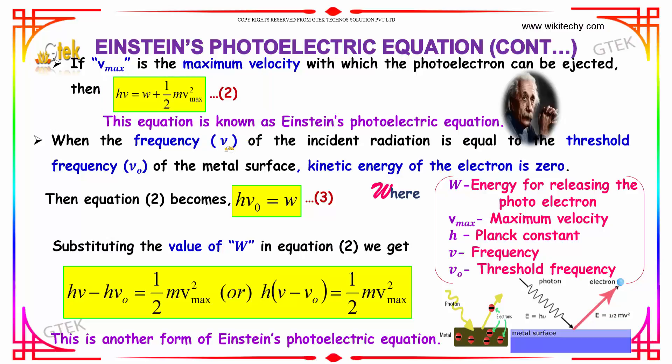When the frequency nu of the incident radiation is equal to the threshold frequency nu nought of the metal surface, the kinetic energy of the electron is considered as zero. So, h nu nought is equal to W.